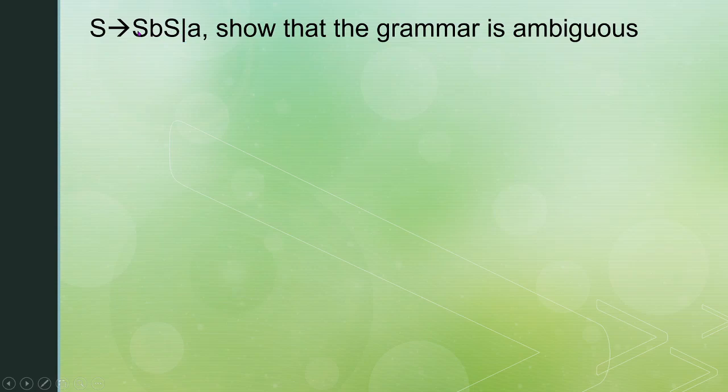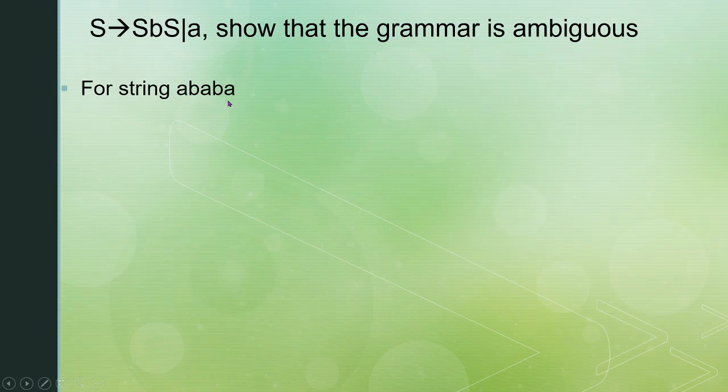The grammar has two rules. We need to show that the grammar is ambiguous. To do this, we select a string — I will select the string A B A B A — and show that this string can be derived in two different ways.